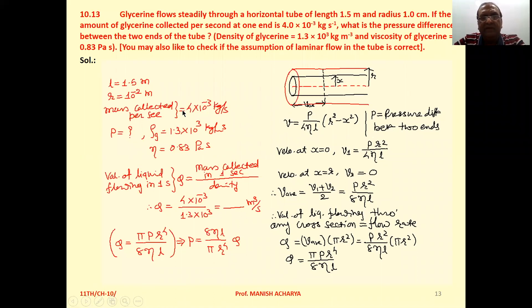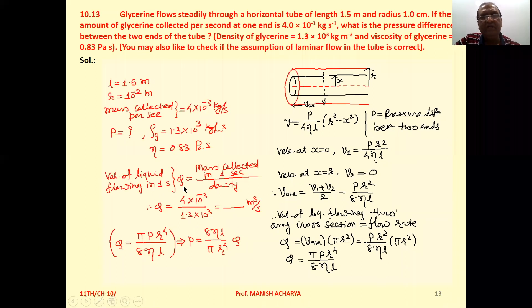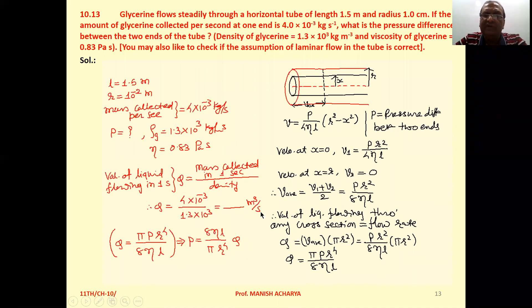Mass collected per second is given. We know that density is mass upon volume, so volume is mass upon density. We can write the volume of liquid flowing in one second, denoted by capital Q. So Q equals mass collected in one second upon density, that is 4 × 10⁻³ upon 1.3 × 10³. Solving this gives us the value of Q in meter cube per second.